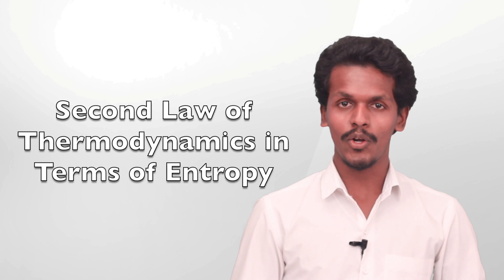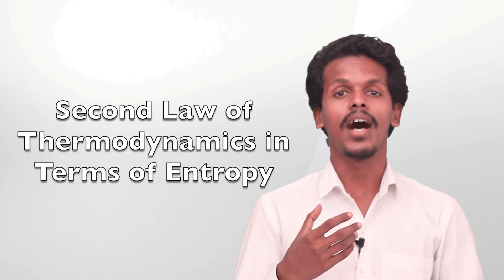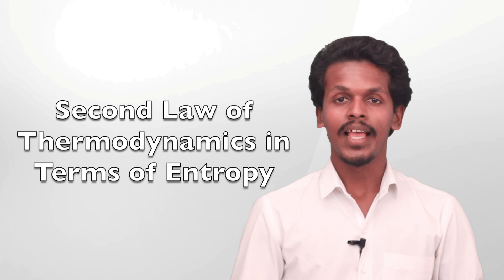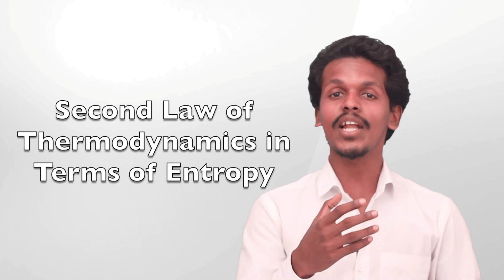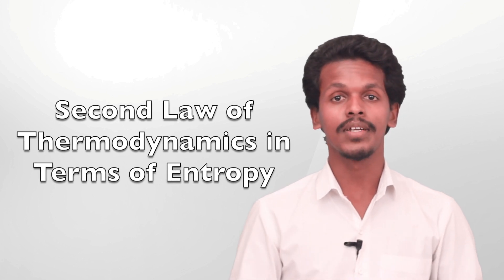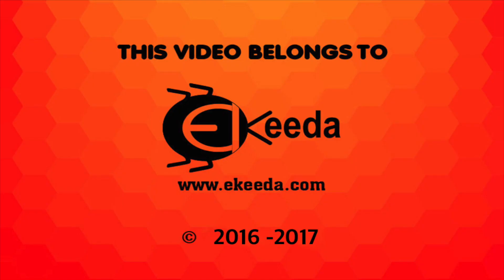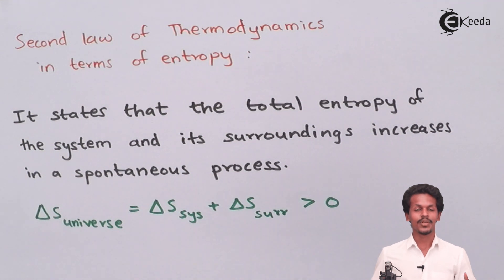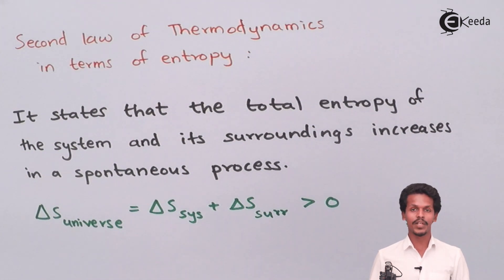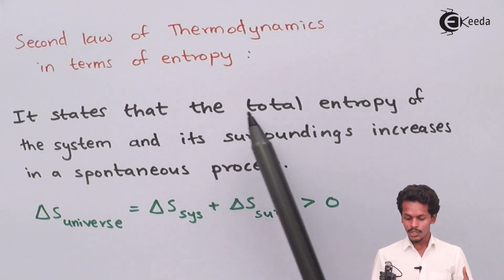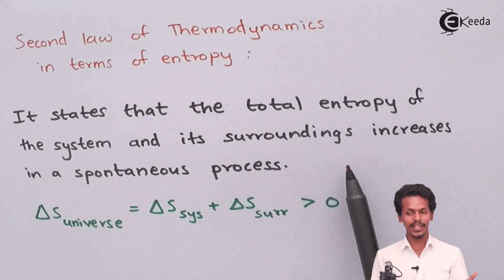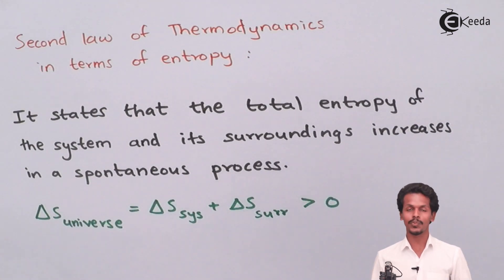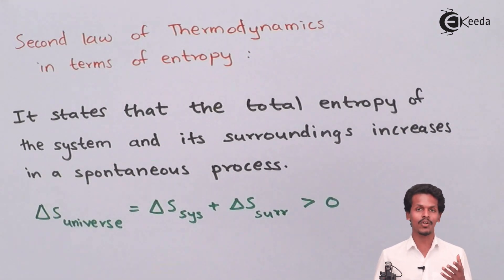In the last lecture we studied about entropy and how entropy decides whether a reaction is spontaneous or not. Now we are going to study the Second Law of Thermodynamics, which is stated in terms of entropy. It states that the total entropy of the system and its surroundings increases in a spontaneous process.